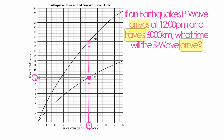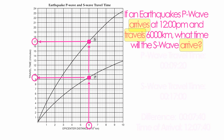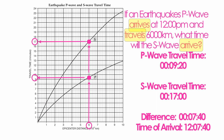Your S-Wave is going to take seventeen minutes to travel six thousand kilometers. Subtract the two travel times and you get a difference of seven minutes and forty seconds. If the P-Wave arrives at 12:00 p.m., the S-Wave is going to come in seven minutes and forty seconds later, arriving at 12:07:40.